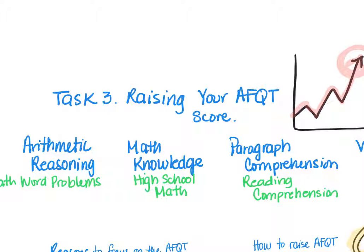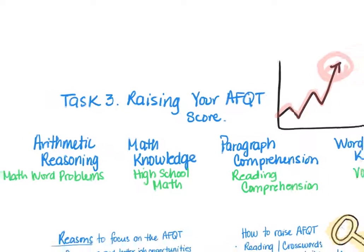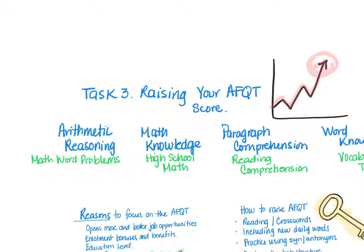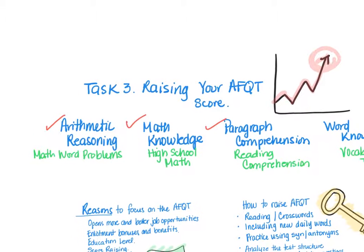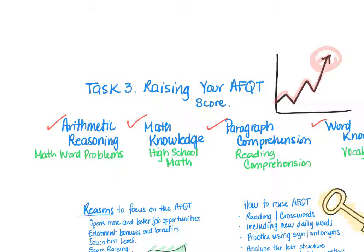Okay guys, we are on to Task Three — congratulations on making it this far, I'm very proud of you. Task Three is about raising your AFQT score. You'll remember from Task One that the AFQT is made up of the math and verbal sections of the test: Arithmetic Reasoning, Math Knowledge, Paragraph Comprehension, and Word Knowledge.